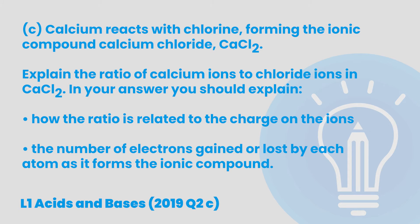Let's get into the nitty gritty and show you how this works inside of answering an actual exam question from level 1 acids and bases. 'Calcium reacts with chlorine, forming the ionic compound calcium chloride. Explain the ratio of calcium ions to chloride ions in calcium chloride. In your answer, you should explain how the ratio is related to the charge on ions and the number of electrons gained or lost by each atom as it forms the ionic compound.'